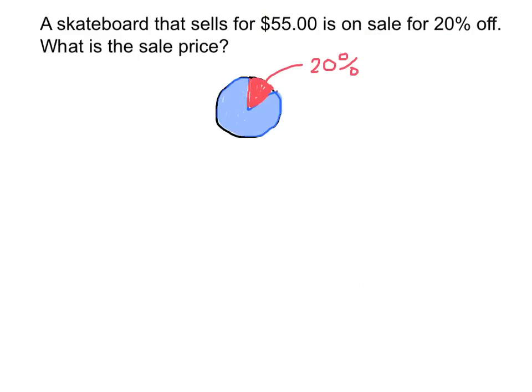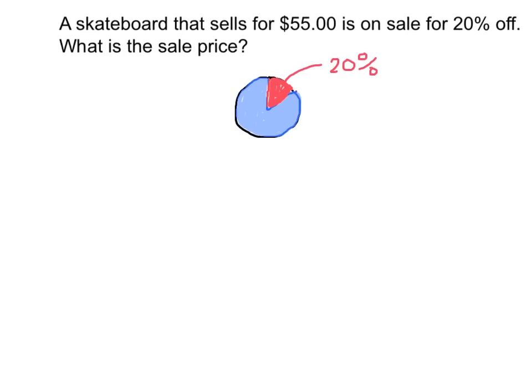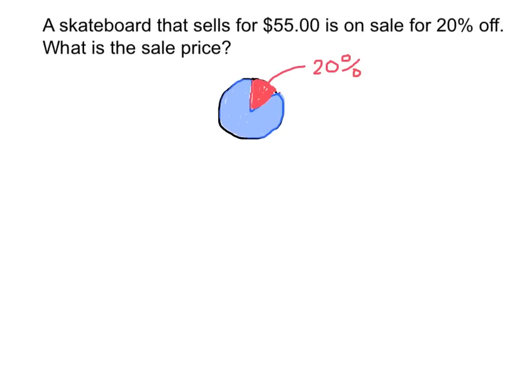For our last example, let's try a problem that you probably will end up doing pretty often in your life. Say a skateboard sells for $55. And it's on sale for 20% off. If you ever go shopping or are going to buy something, it could be on sale and you might have to figure out the new price. That's called the sale price. If it's $55 and it's 20% off, what would be the sale price of this skateboard?